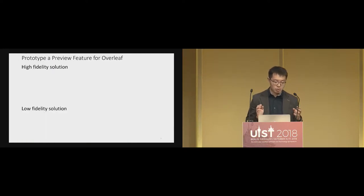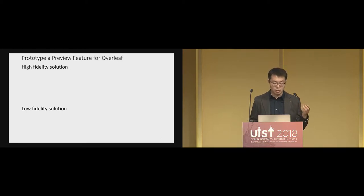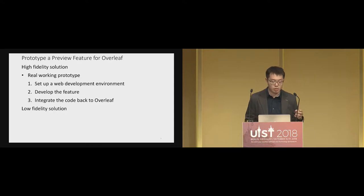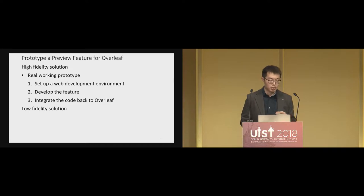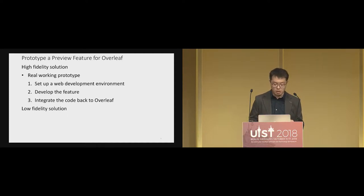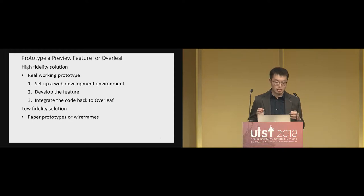There are many ways to prototype this, but based on the criteria of different fidelities, we may have two ways: high and low fidelity solutions. For the high fidelity solution, it's almost like developing the real thing — setting up a web development environment, developing the feature using JavaScript libraries, and integrating the code back into Overleaf. But this has a high barrier to entry, especially for people without a solid engineering background. So often they turn to much lower fidelity solutions like paper prototypes or wireframes. These are easier to make, but we lose the kind of interaction between users and the prototype.